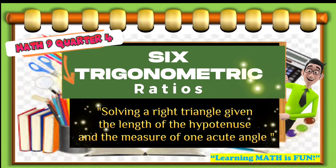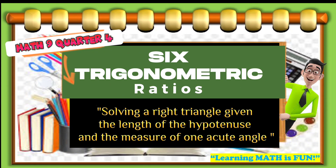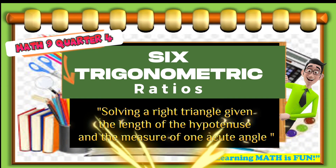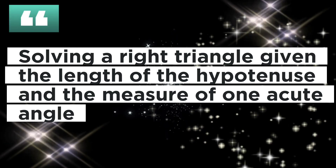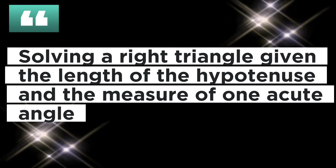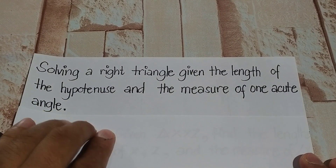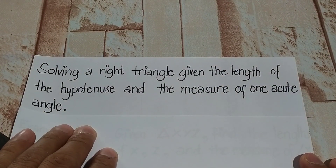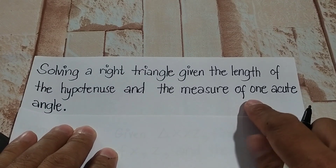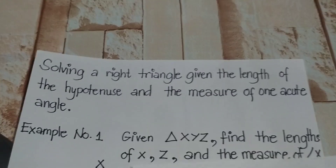Hello everyone! Today we are going to talk about the six trigonometric ratios — solving a right triangle given the length of the hypotenuse and the measure of one acute angle.